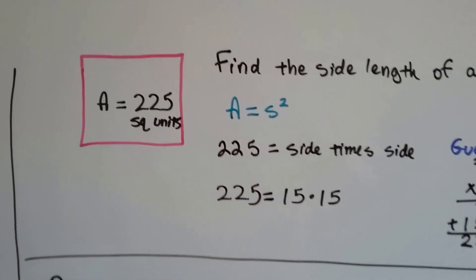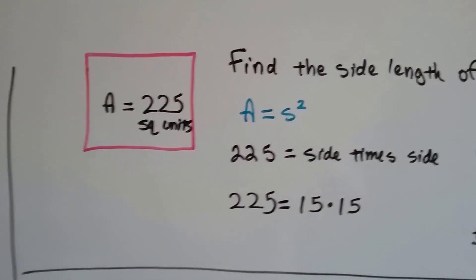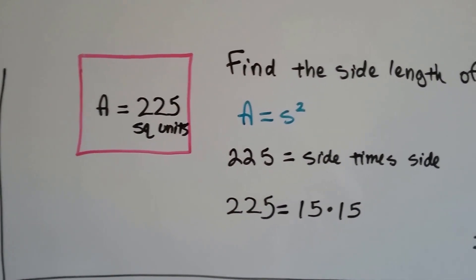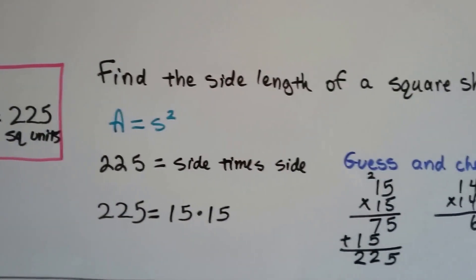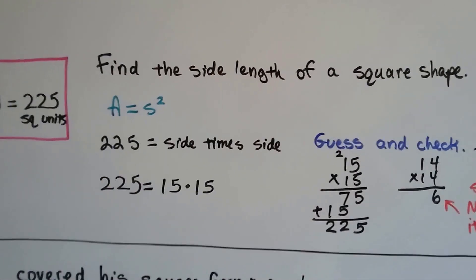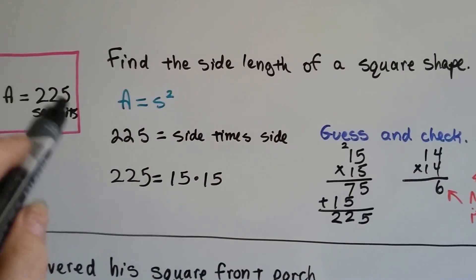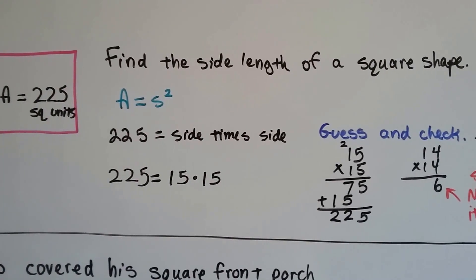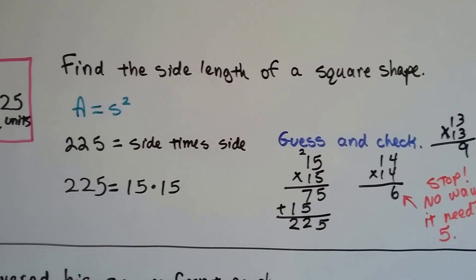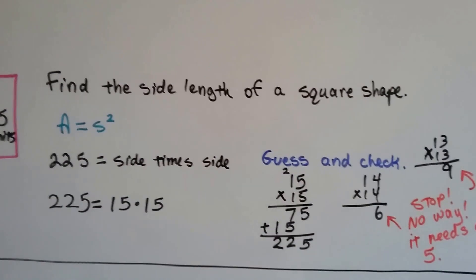If we're given a square and it says A is equal to, the area is equal to 225 square units, we find the side length of the square shape by finding out what times what equals that 225.